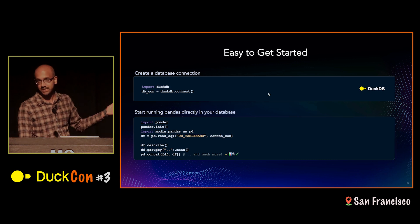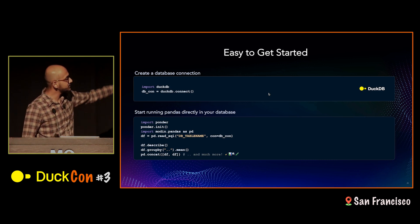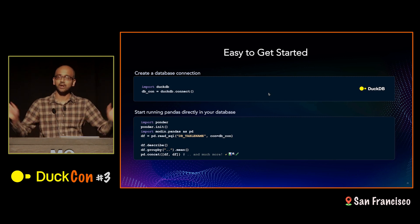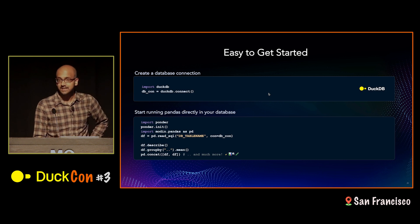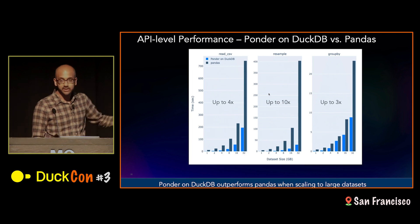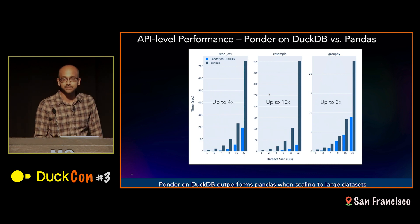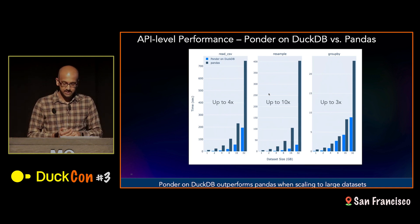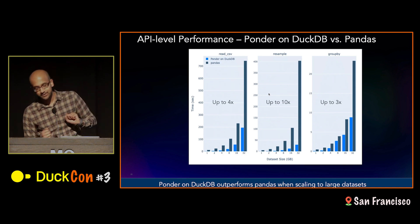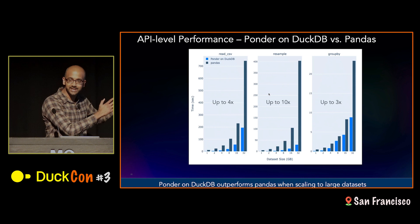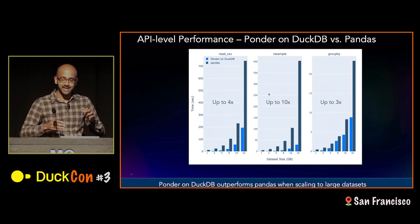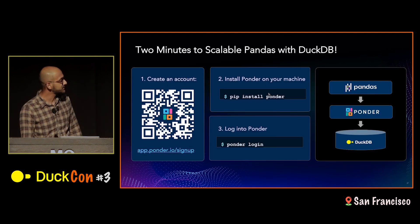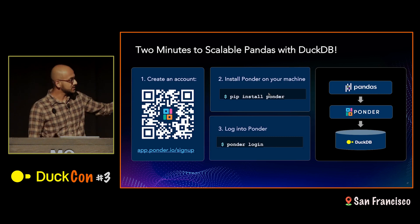From a user standpoint, you set up the database connection — here, DuckDB — then import Ponder and import Modin as well. Modin acts as an orchestrator. Then you do your pandas thing, and it all happens seamlessly and scalably on your database backend. Out of the box, this gives 3x, 4x, or 10x speedups with DuckDB. If I were to write a clickbait article, this would be one quick way to speed up your pandas workflow — just write it as is and it all gets pushed down to DuckDB. If you'd like to try it out, the link is app.ponder.io/signup — just pip install and then log in.